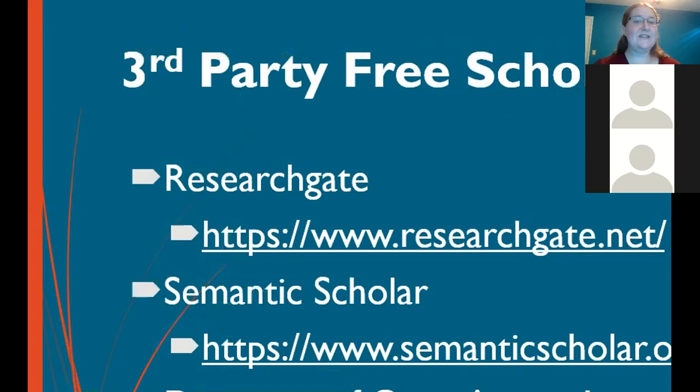Semantic Scholar is another free database online with a lot of great articles for free. The Directory of Open Access Journals — the DOAJ — also has many free articles. Usually when you request something through Interlibrary Loan, we first check our databases, and if it's not there it's probably available for free online — that's why we didn't pay for it. So if we don't have access, it's likely available for free online, and if you still can't find it, you can always request it through Interlibrary Loan.